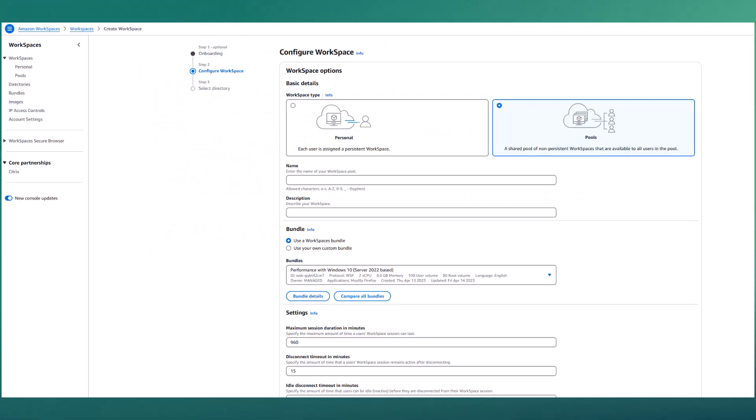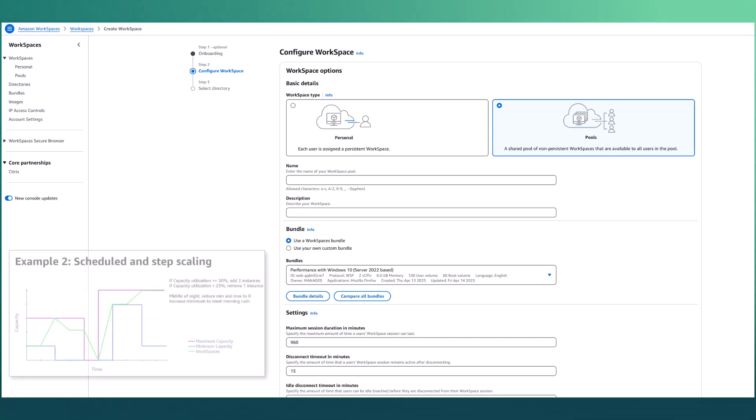We'll now hop over to the AWS WorkSpaces pools console and walk through how to set up example 2, which combines schedule and step scaling to reduce the pool to zero overnight to ensure everything reboots, while also being ready to handle a morning logon rush.